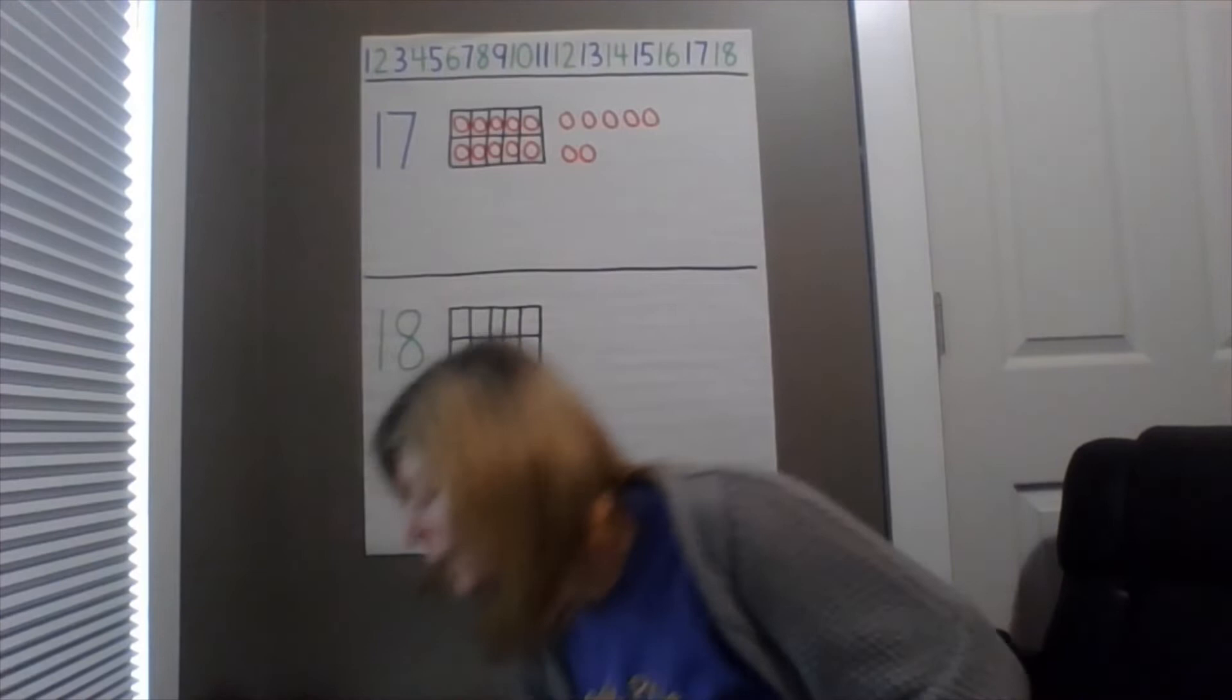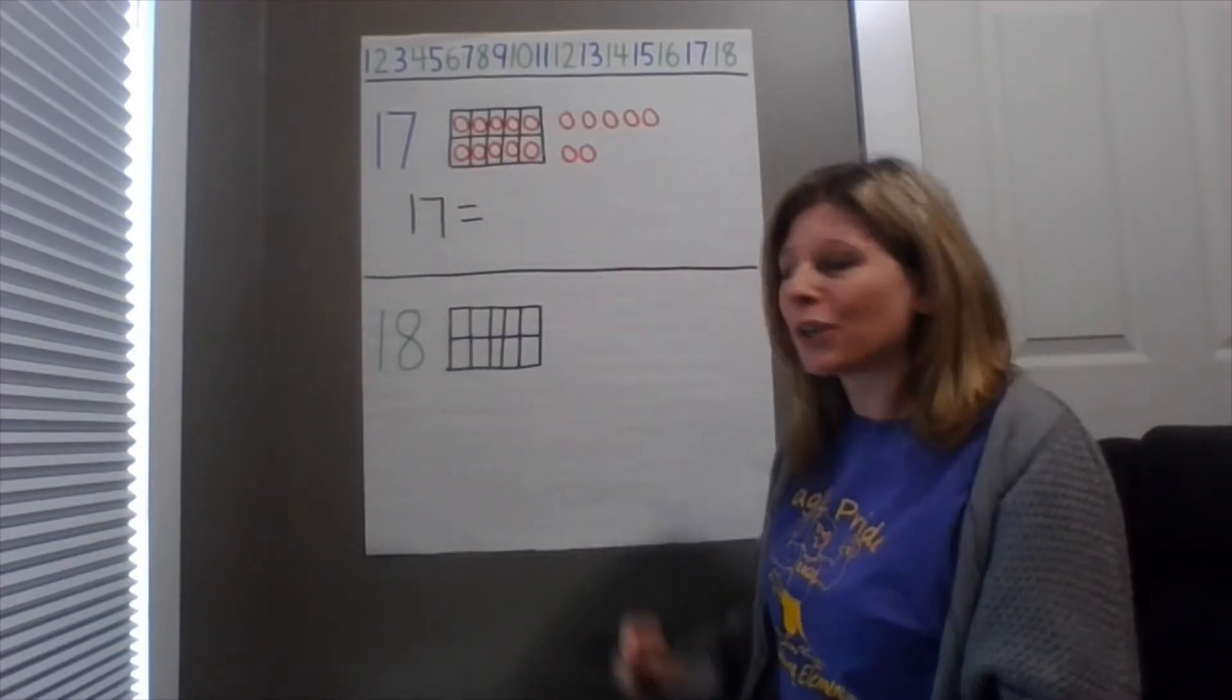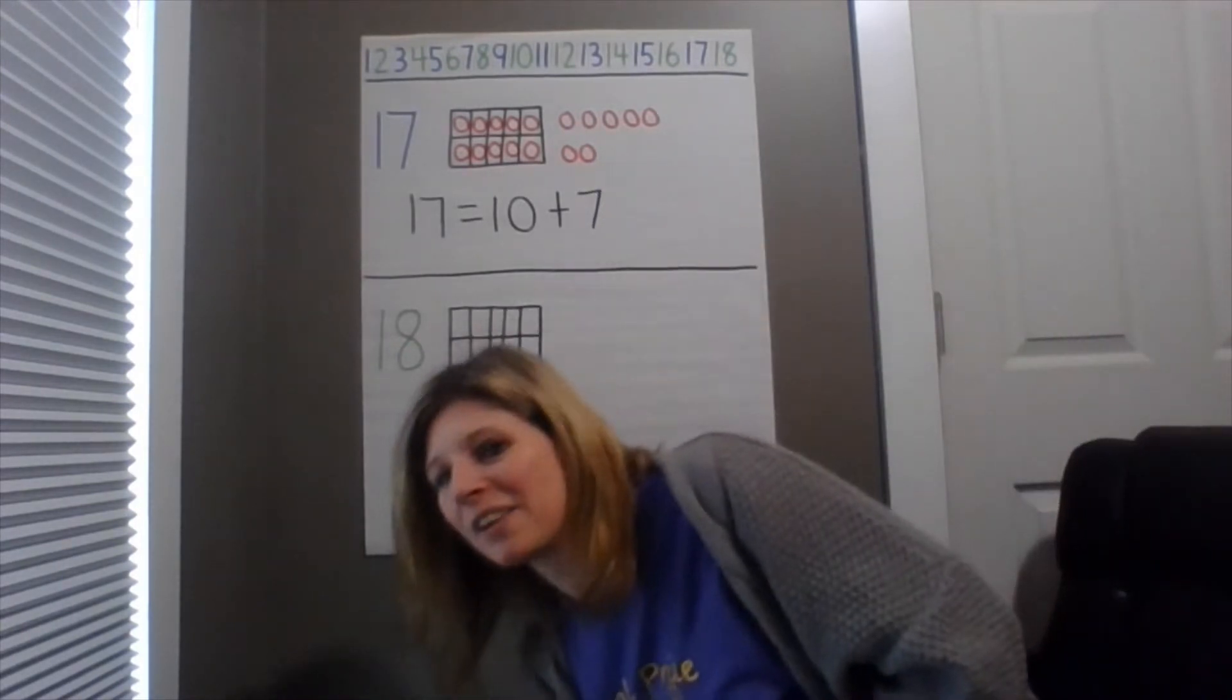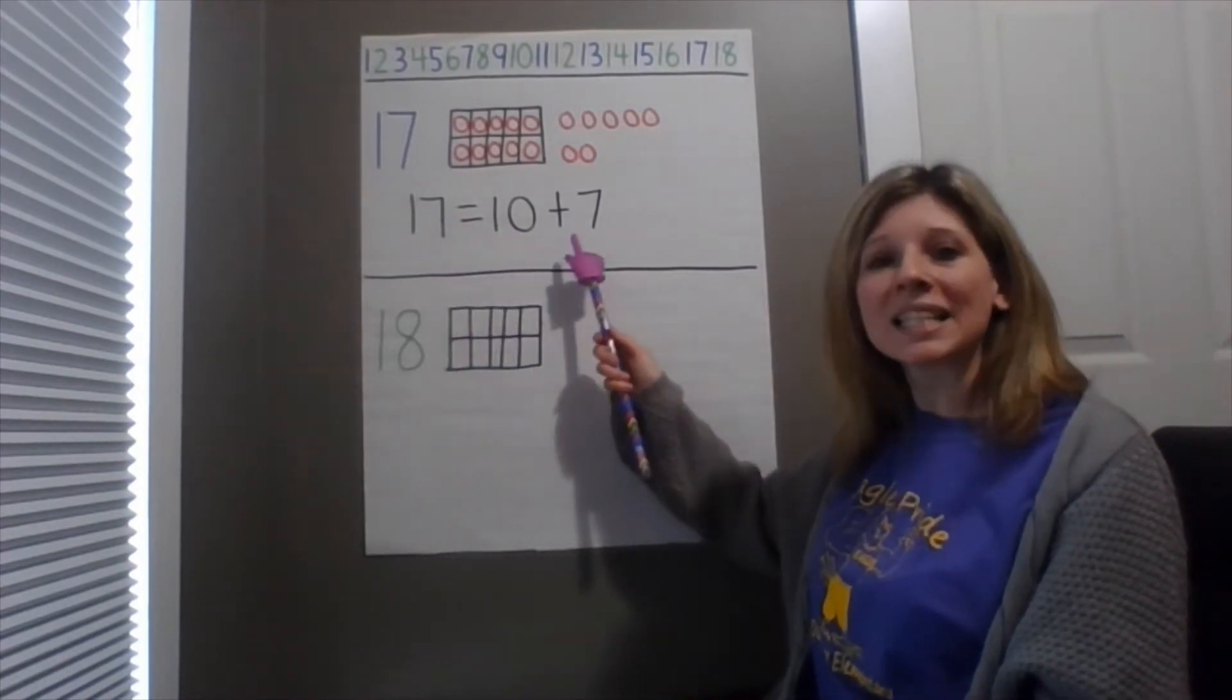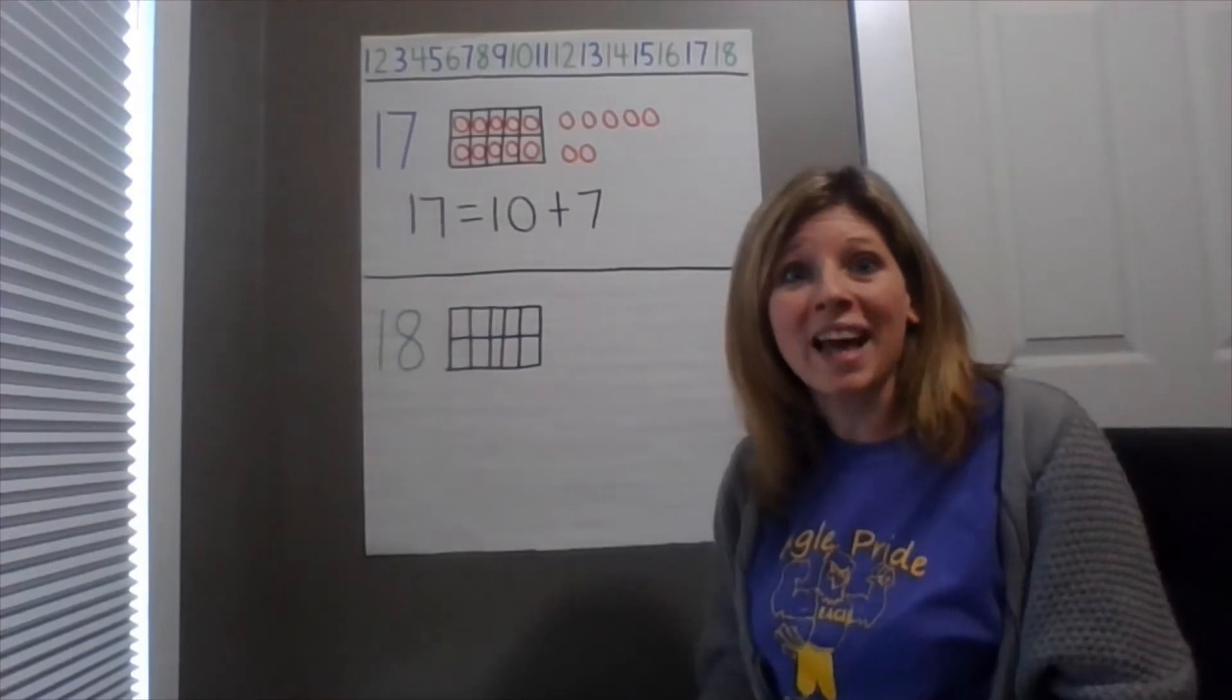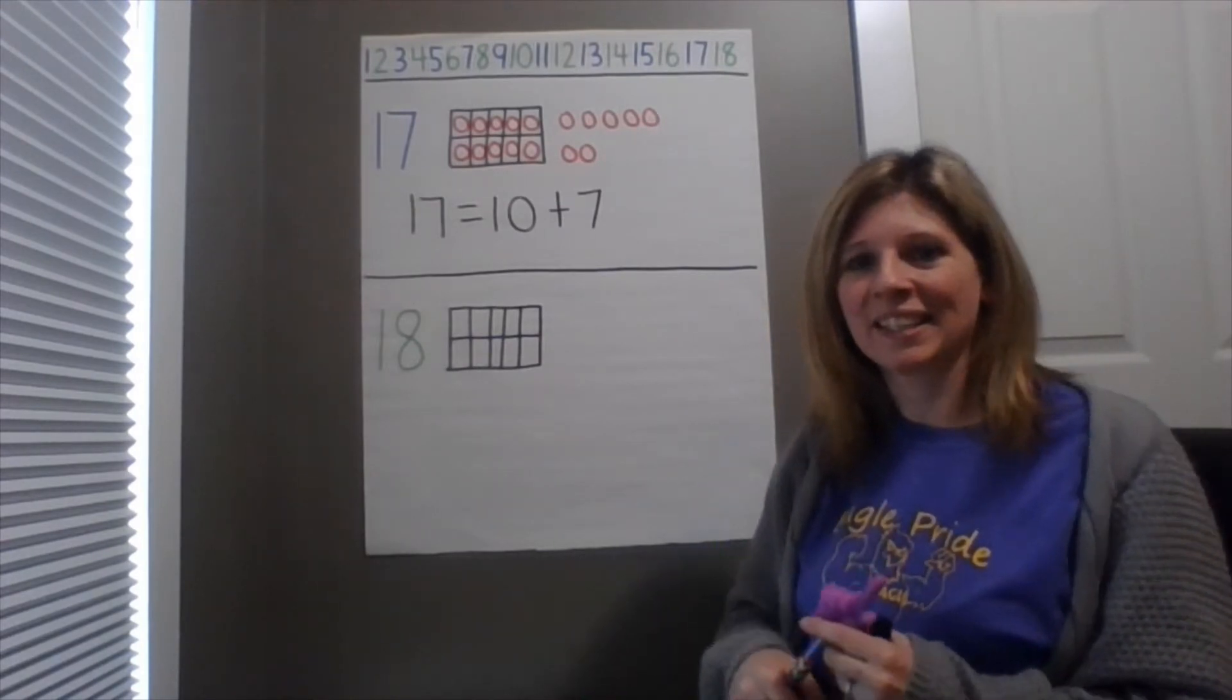Let's write that as a number sentence. Here we go. So 17 is, or is equal to, a group of 10 plus 7 more. Okay. Let's say that number sentence together. Here we go. 17 equals 10 plus 7. One more time. 17 equals 10 plus 7. Please make sure you write that number sentence down to practice so that you can answer that question: What is 17? Excellent.